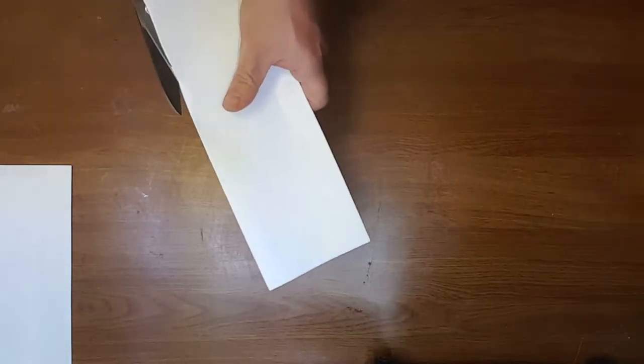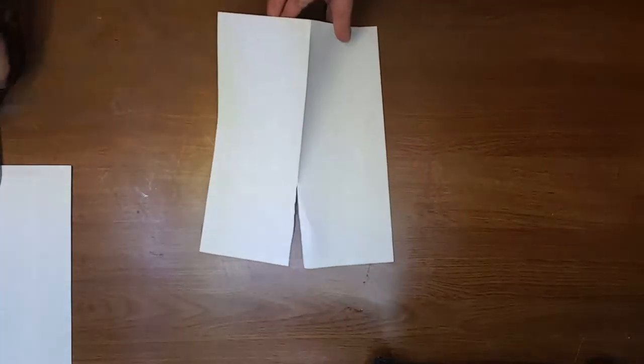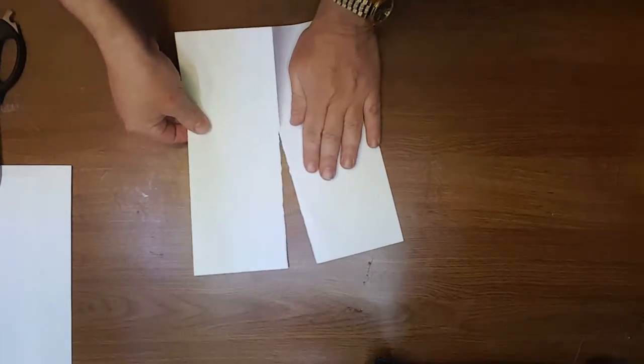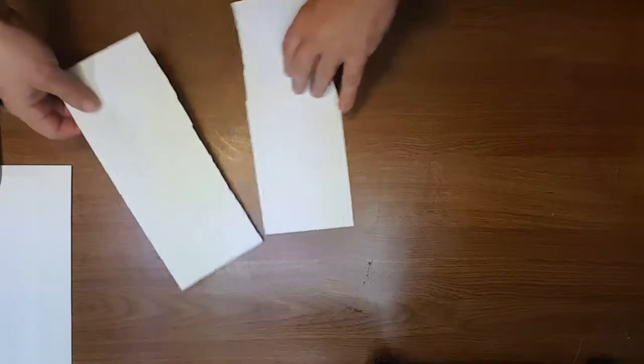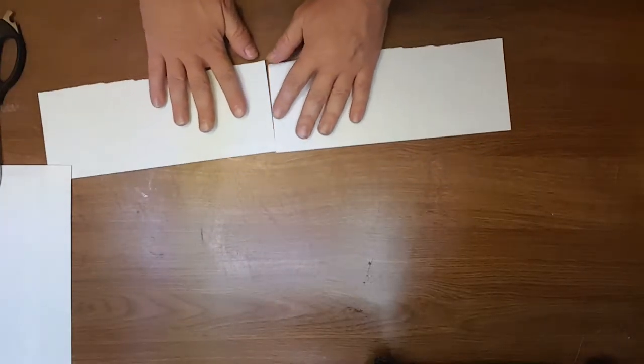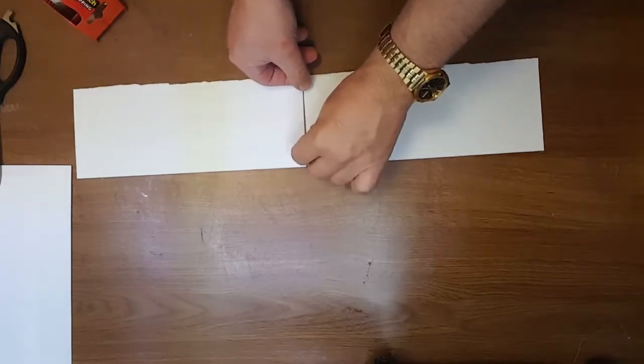So you just fold it to mark a half of the page. It doesn't have to be perfect. If you can tear it, it's even simpler. So connect two pieces with scotch tape.